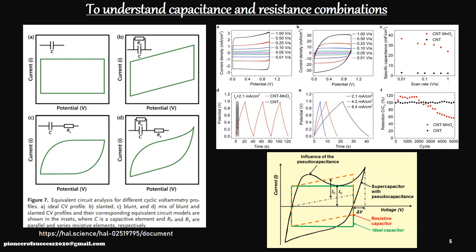Now let's discuss basic qualitative CV shapes. If a system is perfectly capacitive, the CV should look like a rectangular box, as shown in plot A. In plot B, if a resistance is in parallel with the capacitor, the curve changes from a rectangular shape to a parallelogram shape. If a capacitor and resistor are in series, we get a different curve shape again.